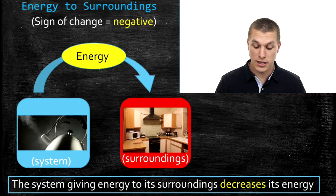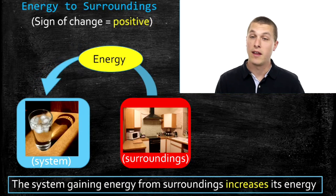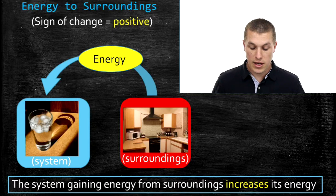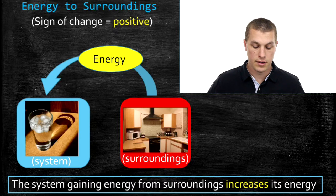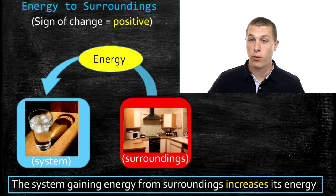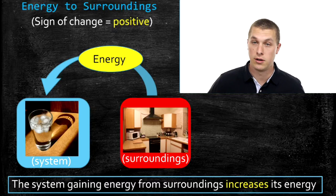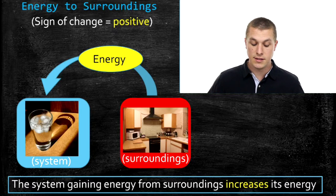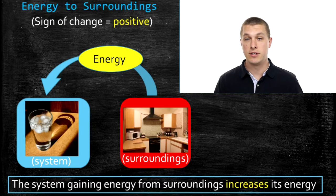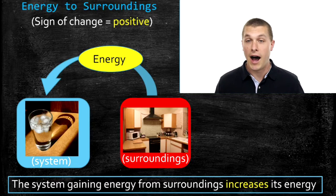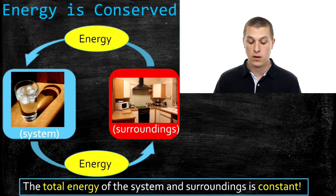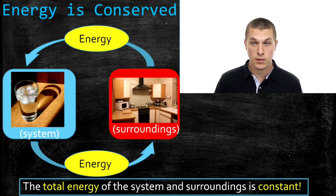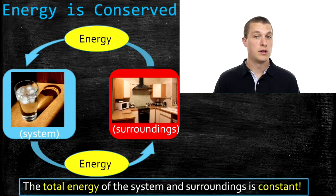We can imagine the heat transfer going the other way, like with that cup of ice water. If energy is going from our surroundings, the kitchen, into our ice water, we say that's a positive change in energy. Because our system, the ice water, is increasing in temperature — it's getting more internal energy. So a system gaining energy from its surroundings increases its energy, and we say that's a positive change in internal energy. Regardless of the energy flow — whether it's going from your system to your surroundings or the other way — there's no total change in energy.